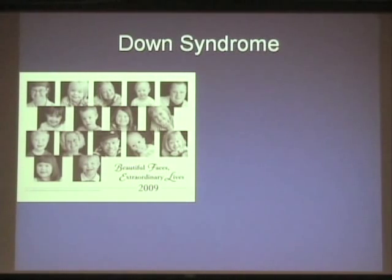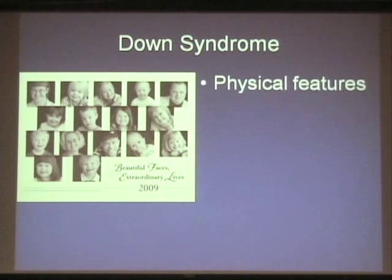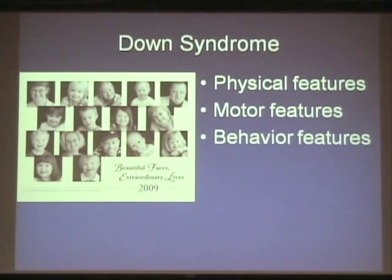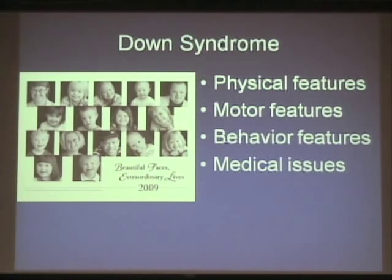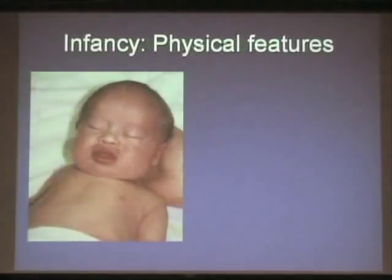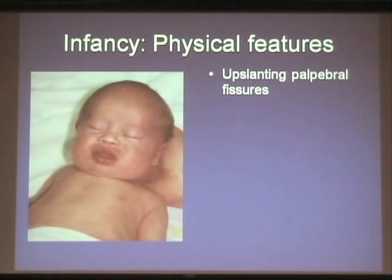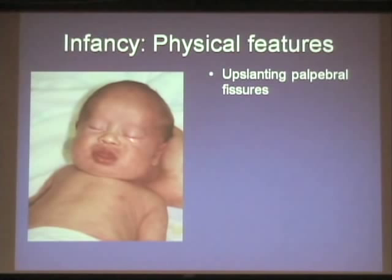Let's look more carefully at Down syndrome features — physical features, motor characteristics, behavioral characteristics, and medical manifestations. These beautiful infants with Down syndrome show some of the features we look for when called into the nursery. The eye openings — called palpebral fissures in medicine — tend to go upwards from the inner corner to the outer corner.